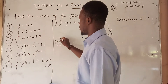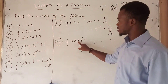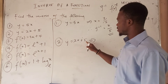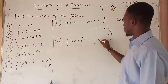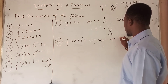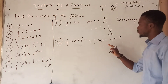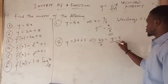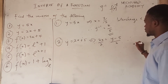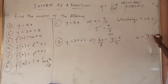For the second one, we have that y is equal to 2x plus 5. We are going to make x the subject formula. So 5 will move over to this side, and what we have left is 2x is equal to y minus 5 — since the positive sign crosses over it becomes negative. Then we divide through by 2, so x is equal to (y minus 5) all over 2.